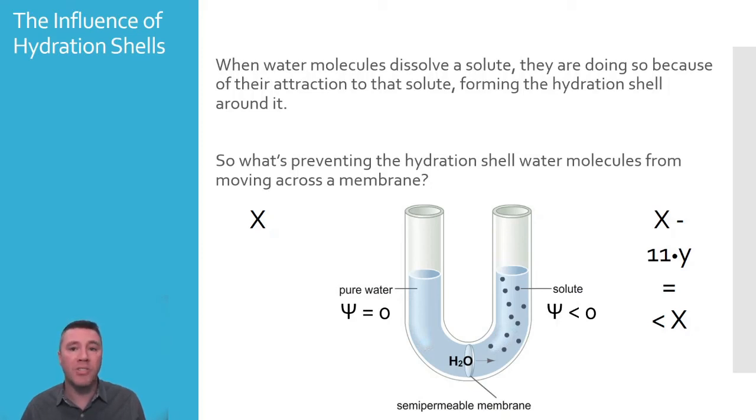Because the solutes themselves are prevented from traveling across the membrane, in this case due to their size, the water molecules associated with them are also unable to travel across the membrane. So on the left, there is a water potential of zero and more water molecules that are free to travel across the membrane. And the right is hypertonic with fewer free water molecules. This will result in a net movement of water from the left to the right.